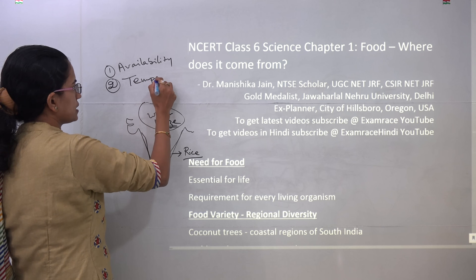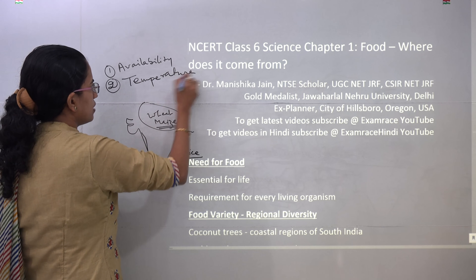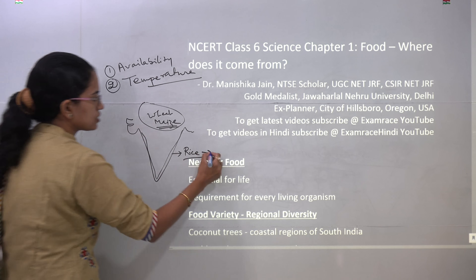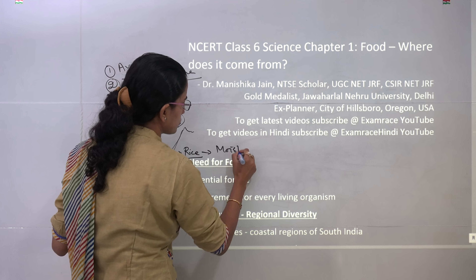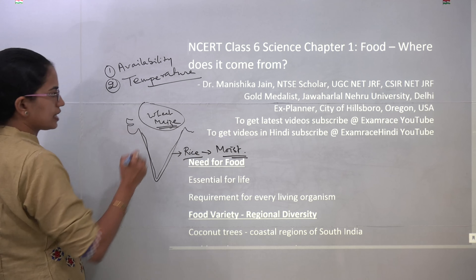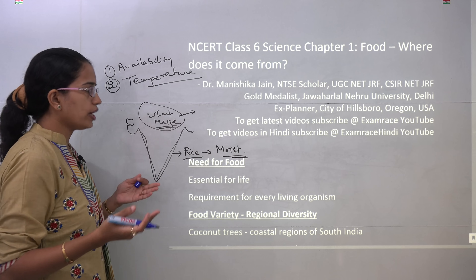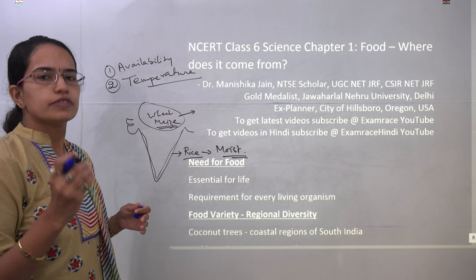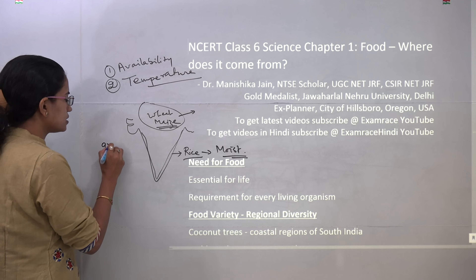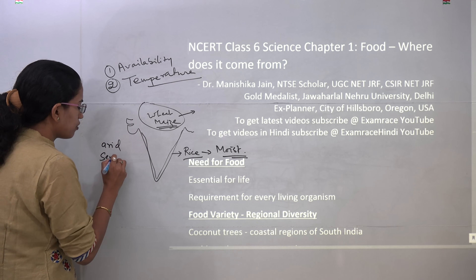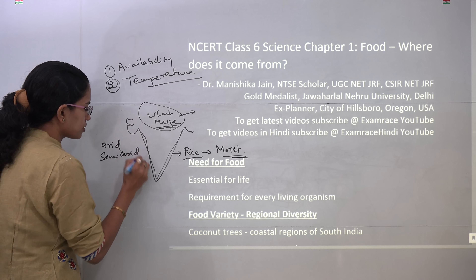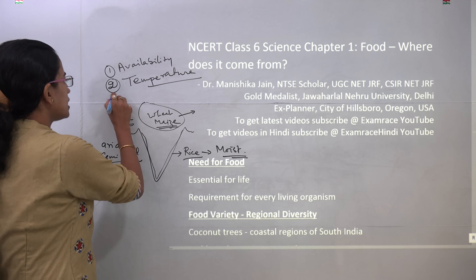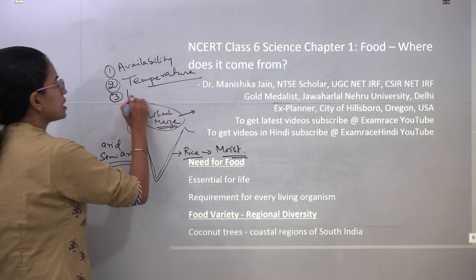The next important parameter is temperature. Temperature governs the kind of crop that would be grown. For example, rice is usually grown in a moist and swampy environment. On the other hand, you have wheat and maize. At another extreme, you have coarse grains like bajra and jowar, which are grown in arid and semi-arid conditions — a kind of hot environment that is required for the growth of these crops.